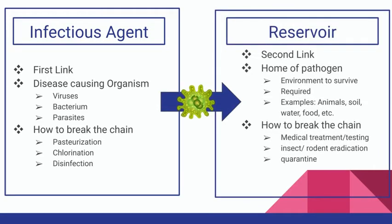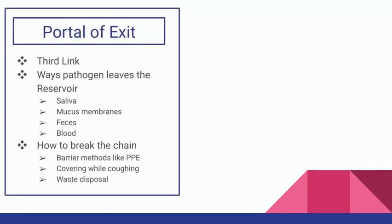The reservoir is basically the home of the pathogen — a place that it lives and that is required for its survival. Examples include animals, soil, water, food, etc. To break the chain and prevent further spread, we use medical treatment and testing, insect and rodent eradication, and quarantine. If not broken, the pathogen will continue to its next link, which is the portal of exit, the third link.